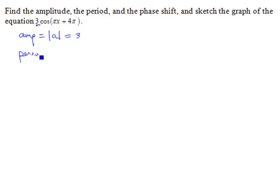The period is found for the cosine, or the sine for that matter, by doing 2 pi over the absolute value of b, where b is the coefficient of x in the argument of the cosine. That is pi in this case, and so we have 2 pi over pi, or just pi.